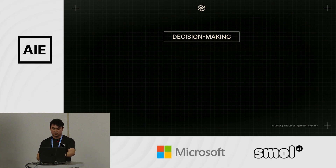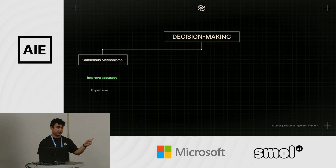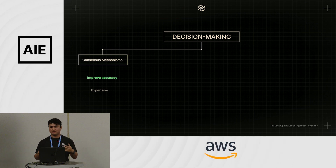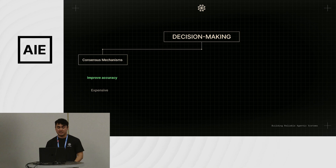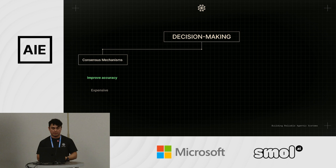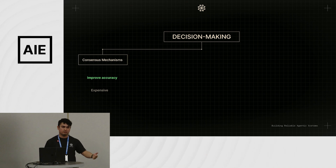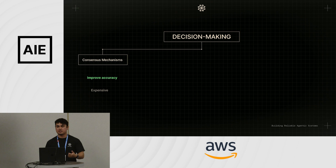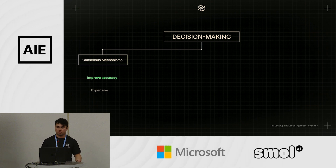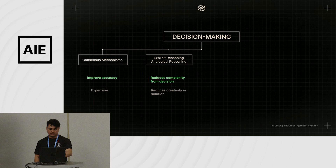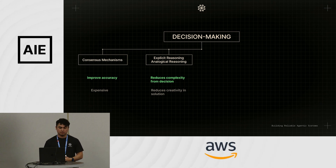Now, decision making. First: consensus mechanisms. Self-consistency is a very popular one — along with prompt ensembles and cluster sampling. Basically, the more inference at runtime you run and the cleverer your way of selecting ideal samples from many inferences, the higher the accuracy — it will just cost more and may introduce longer wait times if you're not parallelizing. We found this very important for getting high-quality, consistent decisions.